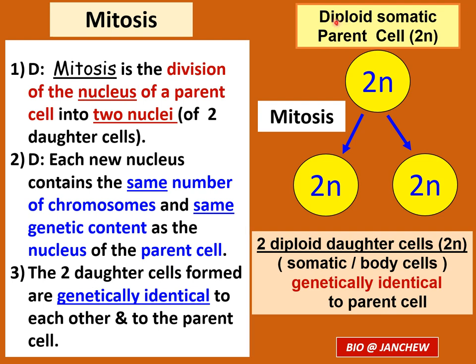In other words, a diploid cell has two copies of each type of chromosome. For example, in humans we have two chromosome number 1, two chromosome number 2, two chromosome number 3, and so forth. These are called the paternal chromosome and the maternal chromosome. Somatic cells are normal body cells, like skin cells and liver cells. The parent cell is a diploid somatic cell and does not involve any gametes.